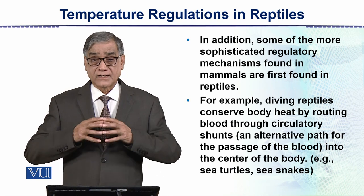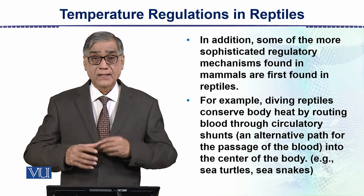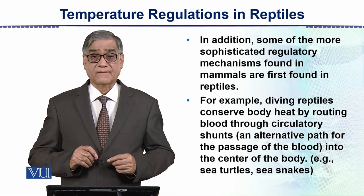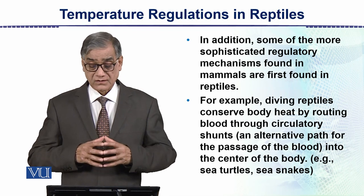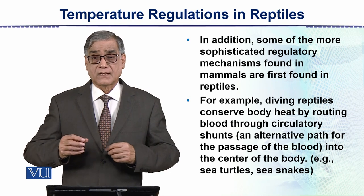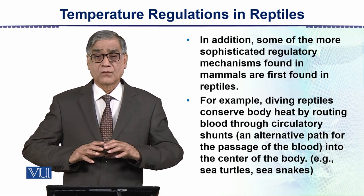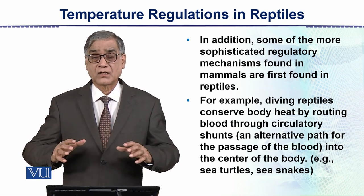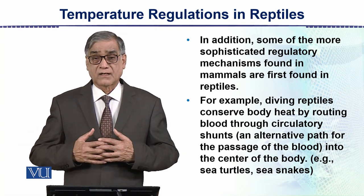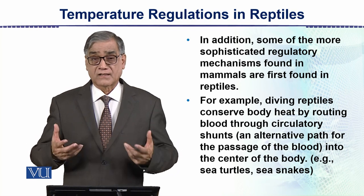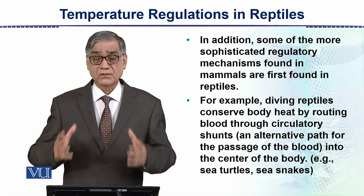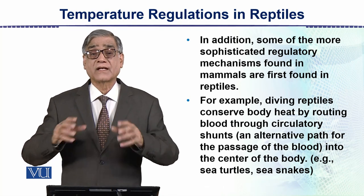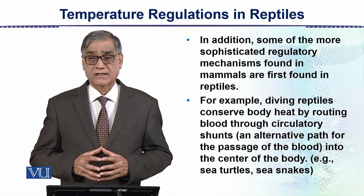Some reptiles are also diving reptiles. They conserve heat by routing blood through circulatory shunts. A shunt is an alternative path for the passage of blood. If the temperature is very high, the shunt will open and allow blood to circulate in the skin and also in the mouth. This is how they regulate body temperature.